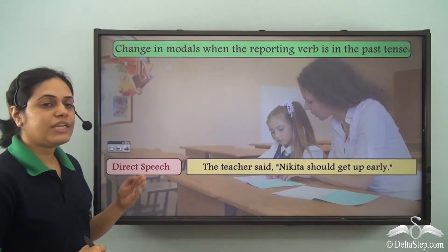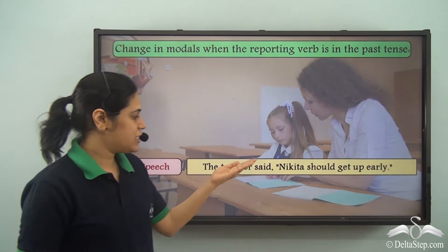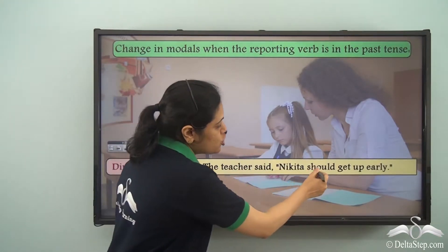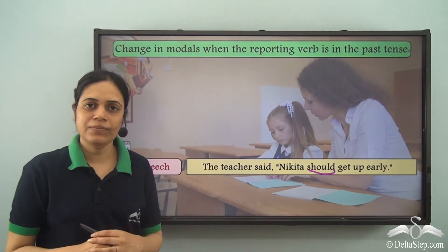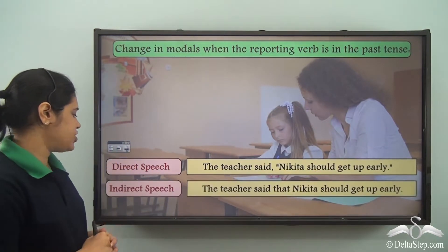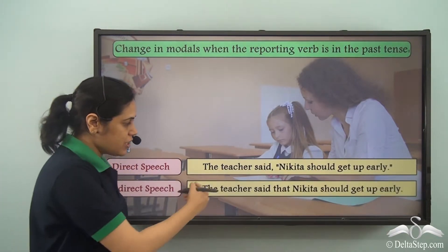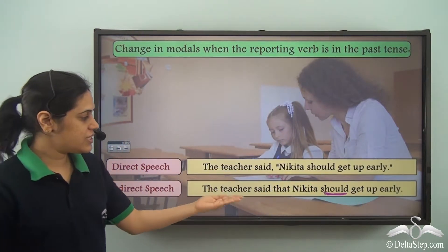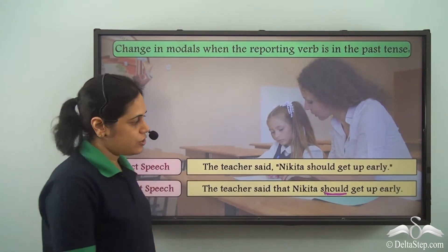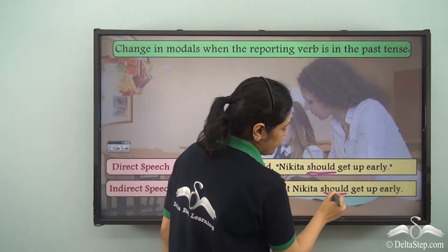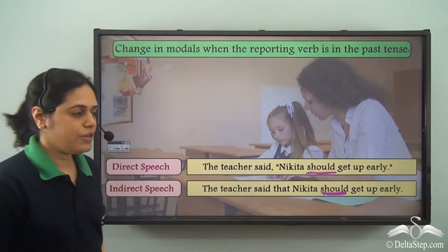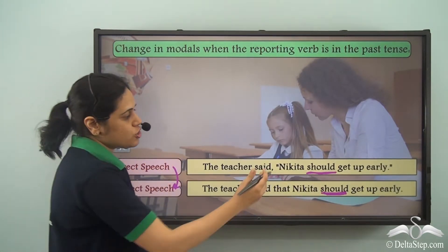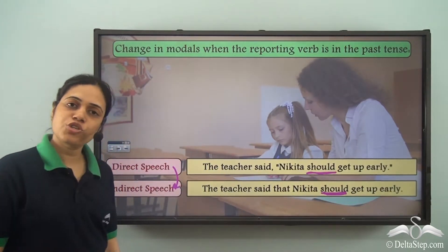'The teacher said Nikita should get up early.' Here 'should' is the modal. When changing to indirect speech, it remains the same: 'The teacher said that Nikita should get up early.' So 'should' remains 'should' when converting from direct to indirect speech.